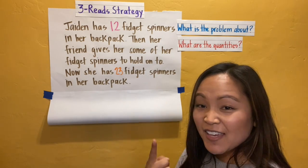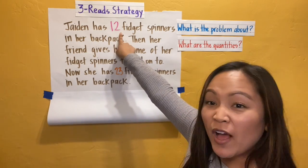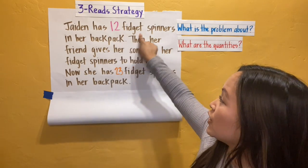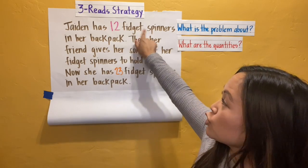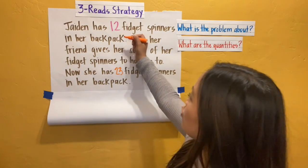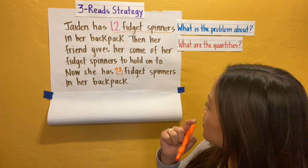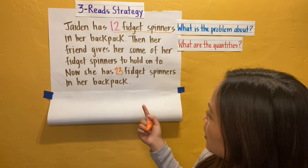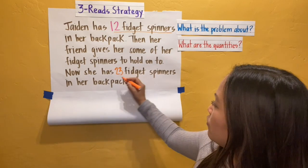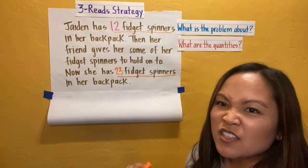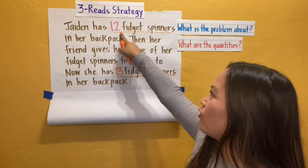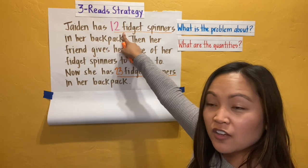One of the first quantities I see is the number 12. Remember, when we name our quantities, we can't just say the number — we have to include the label or the unit. 12 what? 12 fidget spinners. So I see that as one of our first quantities. And I see another quantity: now Jaden has 23 fidget spinners. So I'm thinking about the relationship between 12 and 23 — Jaden started off with 12 and now she has more, she is now 23.